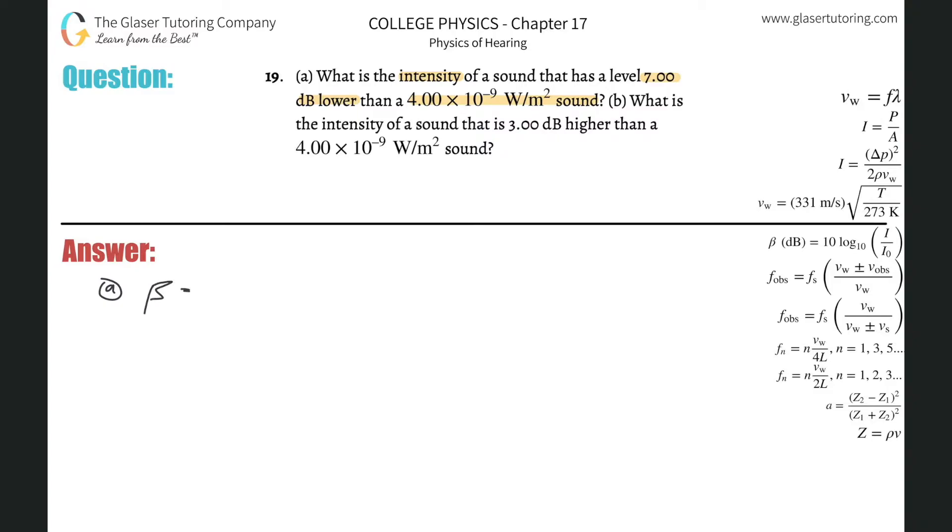So decibels beta is going to be equal to 10 multiplied by the log of base 10 of the intensity that's being heard divided by the threshold of hearing, which is I sub O, which is also 10 to the minus 12.